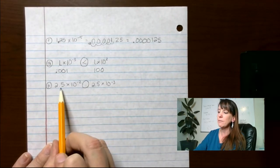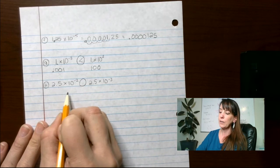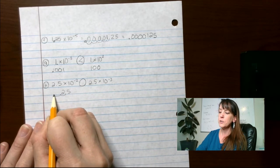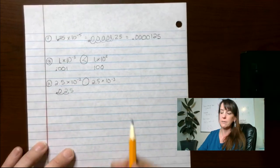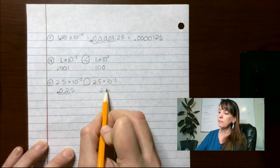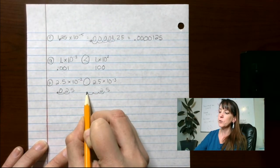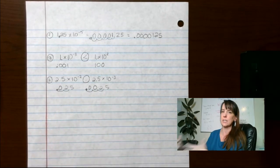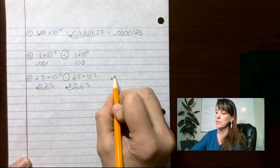So then on this guy, we have 2.5. And we're going to move that over. So 2.5, we're going to go over 1, 2 spots. So 0.025. And then we've got 2.5. We're going to go over 1, 2, 3 spots. So you can see when comparing, and remember for us to compare decimals, we have to have the same number of digits.